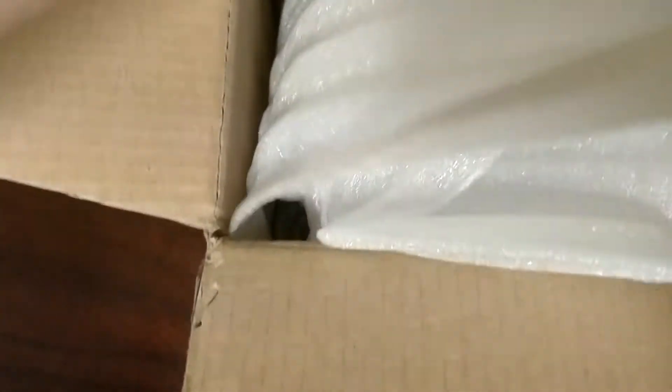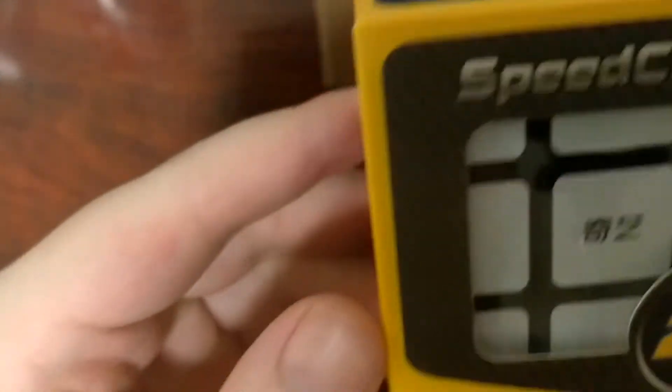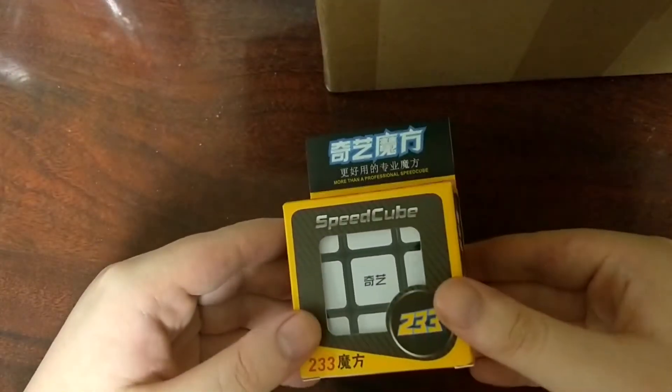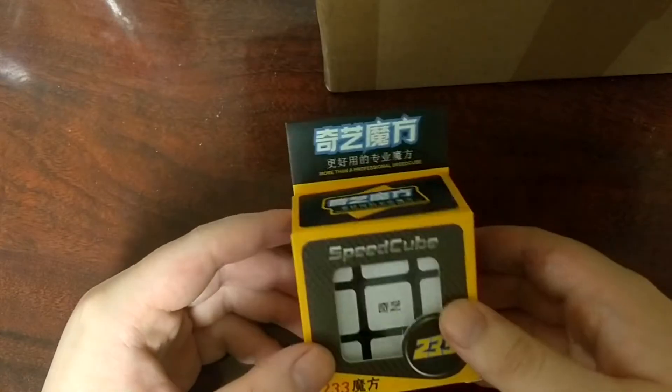Alright, so I have in here an invoice. First up, we have a Chi 2x3x3. It's a pretty neat cuboid.